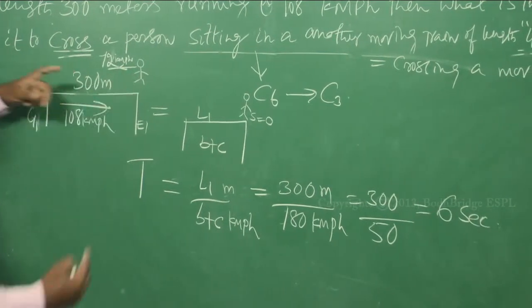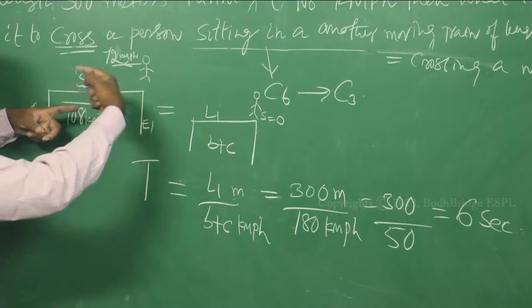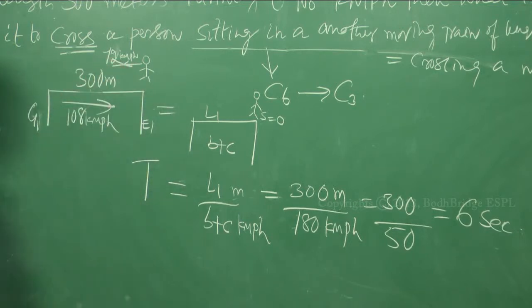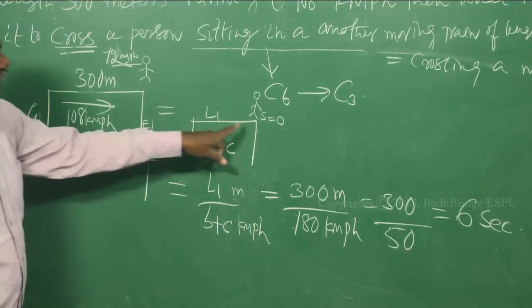So the person is moving at 72 km per hour, the train is moving at 108 km per hour. So this diagram is nothing but this.